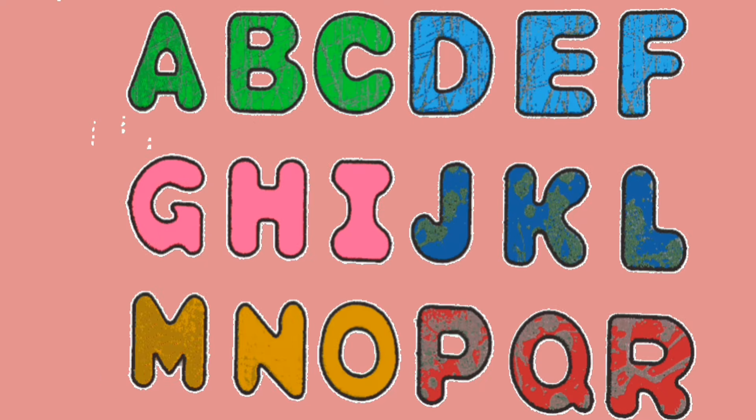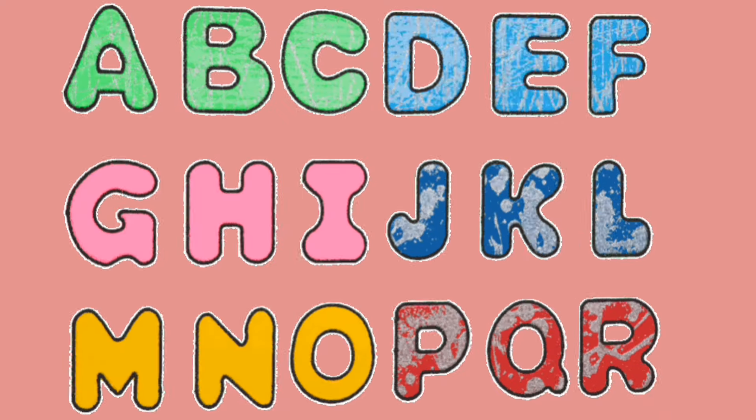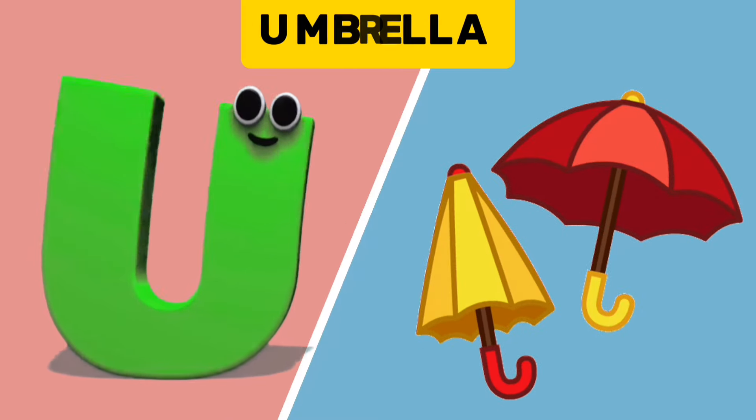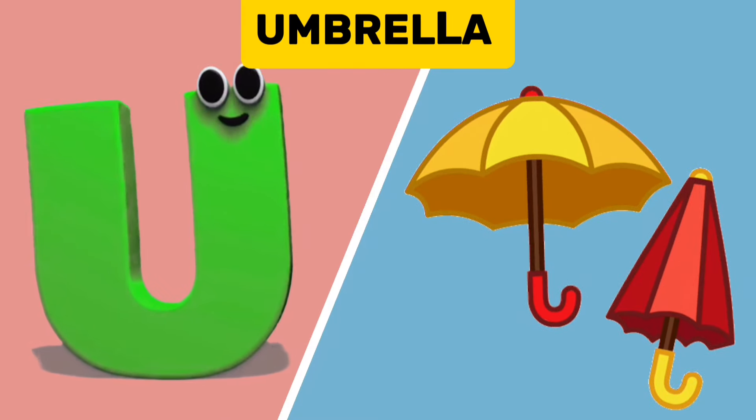T. It's the letters of the alphabet. U is for Umbrella.